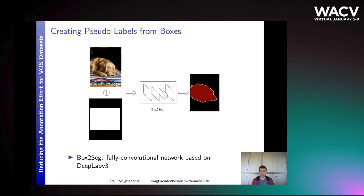To create masks from bounding boxes automatically, we use a neural network called Box2Seg, which is a fully convolutional network based on the DeepLab V3+ architecture. The input to the network is an image cropped to the object of interest, together with an additional input channel which encodes the bounding box as a segmentation mask. This is given to the network, which predicts a fine segmentation mask automatically.